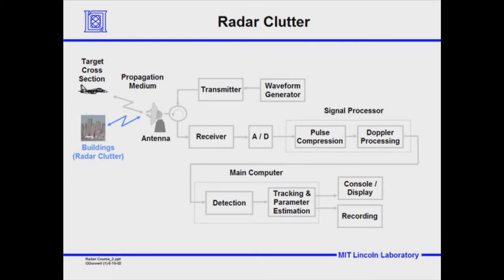Back again to the radar block diagram. You see here the antenna emitting radiation and receiving back some backscatter. What is radar clutter? We have a target out there — an aircraft — and it has a target cross-section, and an echo will come back from that. But there are an awful lot of other objects out in the environment that the radar beam will intersect, interact with, scatter off of, and backscatter will come back to the antenna and be received by the radar. All this unwanted backscatter from real physical objects out there in the environment is what we call radar clutter.